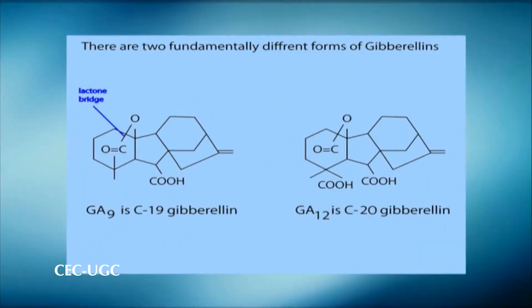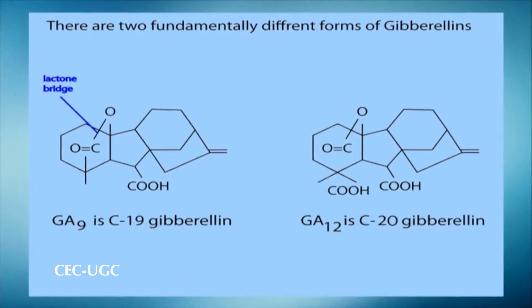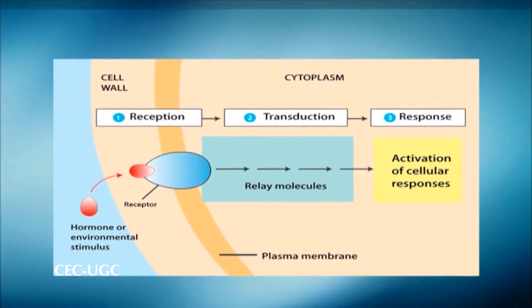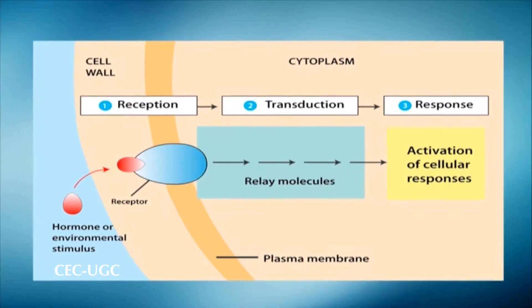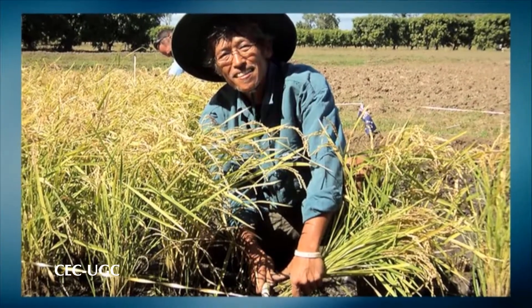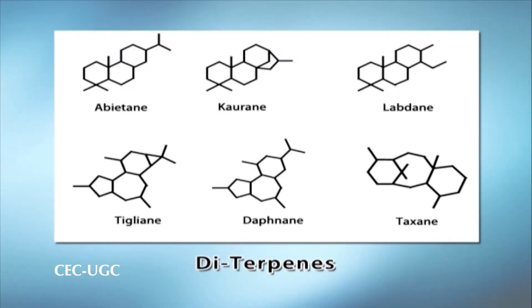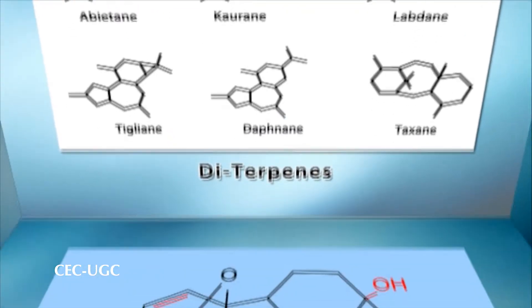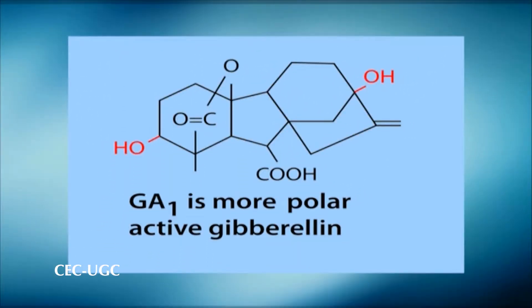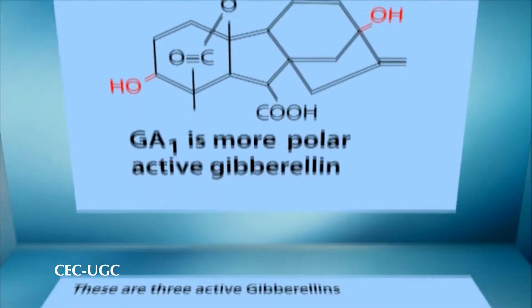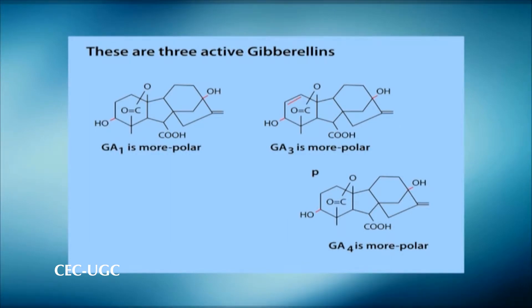There are 126 known Gibberellins divided into two classes, and many more may be discovered in the future. Plants produce these hormones naturally through biosynthesis as they grow, ensuring they have the hormones they need to develop normally. These hormones can also be applied to plants by gardeners and farmers to achieve specific desired outcomes. Gibberellins are diterpene plant hormones synthesized through complex pathways, controlling diverse aspects of growth and development. The most widely available compound is GA3 or gibberellic acid, while the most important GA in plants is GA1, which is primarily responsible for stem elongation. Different GAs differ in biological activity according to the ease with which they are metabolized to GA1.